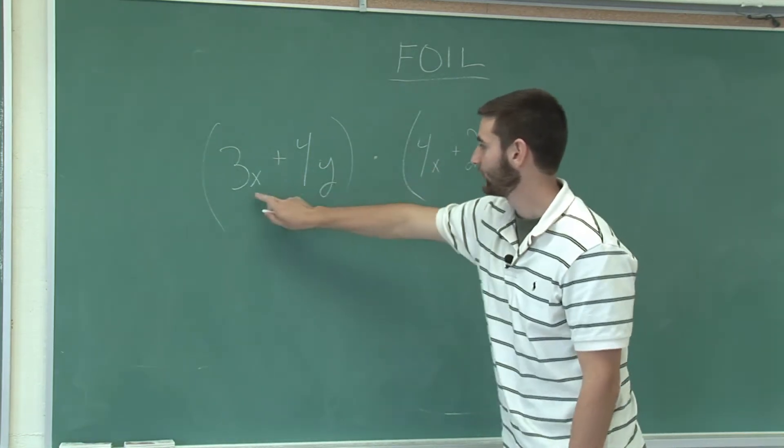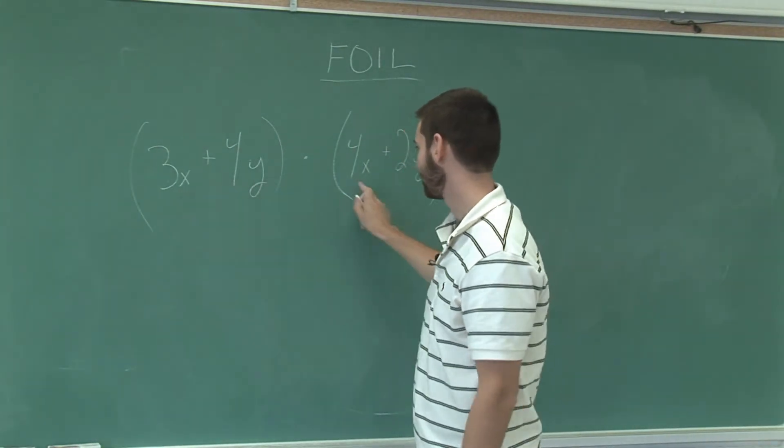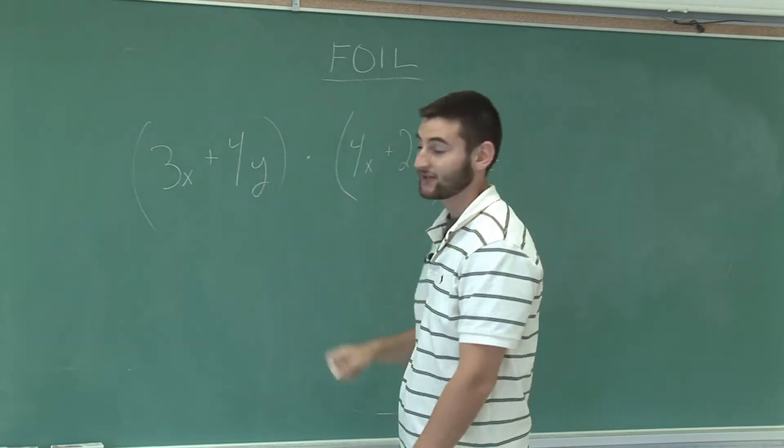So let's start with the first. 3x and 4x, 3 times 4 is 12, and x times x is x squared.